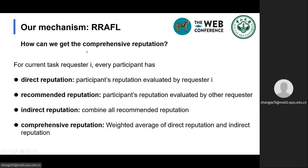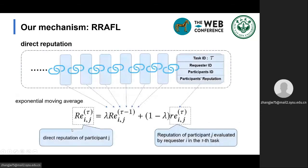So how can we get the comprehensive reputation of each participant? For requester I, the participant's reputation evaluated by requester I is called direct reputation. Other requesters are called recommenders. The reputation obtained by combining all recommended reputations is called indirect reputation. Direct reputation and indirect reputation are combined as the comprehensive reputation. The participant's reputation in each task is preserved in the interaction blockchain. Since the reputation evaluation closer to the current time can better reflect the nature of the candidate, the requester performs an exponential moving average of the reputation of the candidate evaluated in each task to obtain direct reputation.